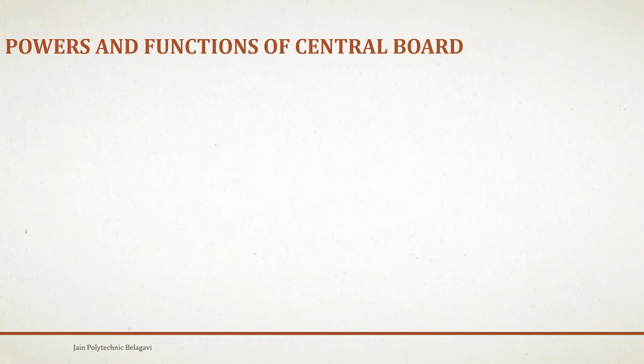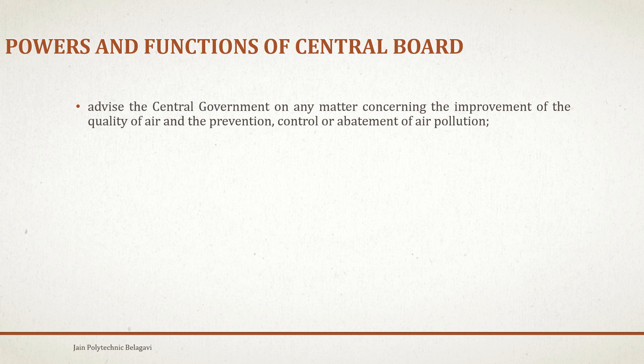The powers and functions of the Central Board include: to advise the central government on any matter concerning the improvement of quality of air and the prevention, control, or abatement of air pollution. The central government will advise on controlling and preventing air pollution by different methods or improving the quality of air.